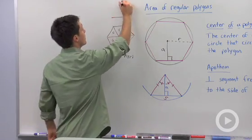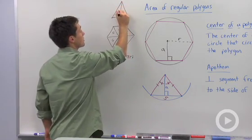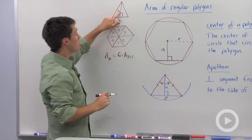Well if you recall, in order to calculate the area of a triangle, you need two things. You need the base and its corresponding height. So that's why we need the apothem, because the apothem is that corresponding height.